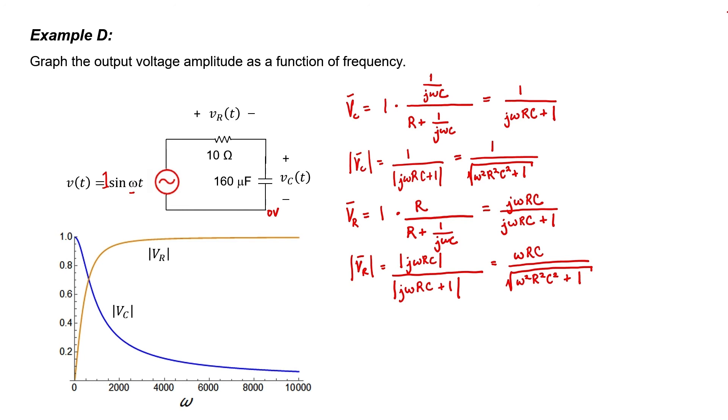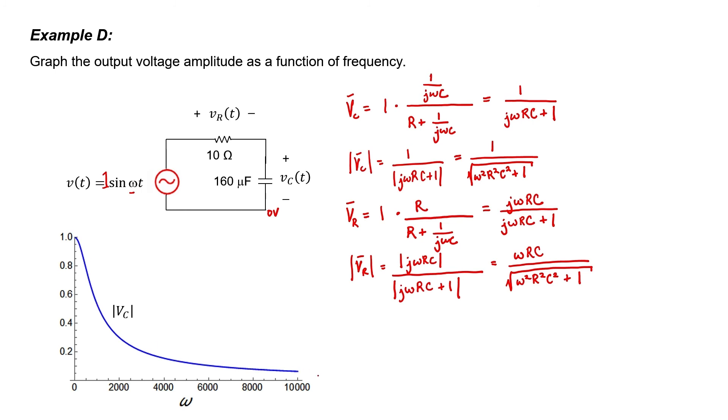These two curves — taking the capacitor or the resistor as the load — represent filters. When the output is taken across the capacitor, low frequencies pass through unattenuated while high frequencies are blocked; this is a low-pass filter. When the load is the resistor, the opposite is true: at high frequencies the output nearly equals the input, but at low frequencies it does not. This is called a high-pass filter. Filters like these are very useful in electronics, and through the use of phasors we can plot their magnitudes and find their properties without too much difficulty.